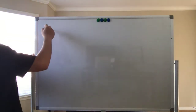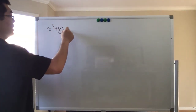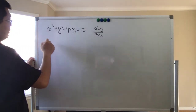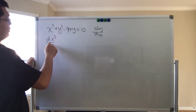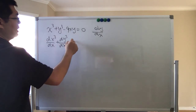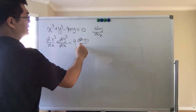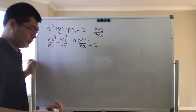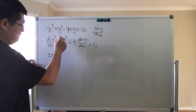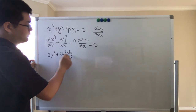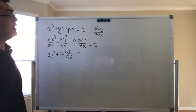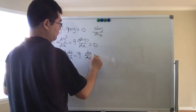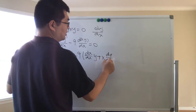So we have x cubed plus y cubed minus 9xy equals 0. Using implicit differentiation: d/dx of x cubed plus d/dx of y cubed minus 9 times d/dx of xy equals 0. This gives 3x squared plus 3y squared dy/dx, and for the xy term we use the product rule, giving minus 9 times (dx/dx · y plus x · dy/dx) equals 0.